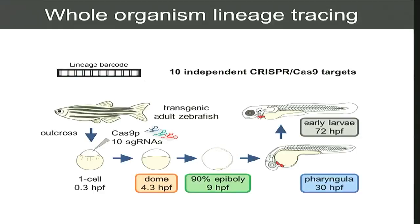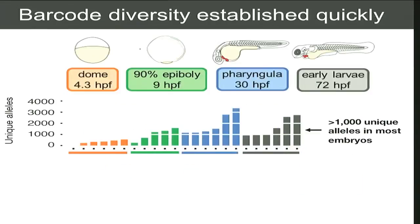We let development proceed through embryogenesis and then onward to adult stages. While we were waiting for the adults to grow up, we took a bunch of embryos and looked at them to see if this was working. One thing we see is that we do see a lot of alleles — when we sequence over the barcode region, just PCR-ing and sequencing that barcode, we see diversity accumulate. Even though we have only ten target sites, we're accumulating thousands of unique alleles. Comparing different embryos to each other, we don't see sharing of alleles, which convinces us that when we see the same allele twice in a given embryo, it's truly by descent rather than by chance.